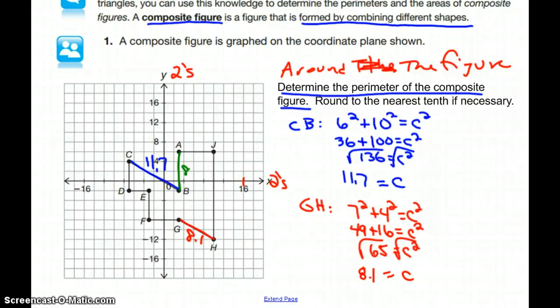From J to H, that's 9 full boxes, so I have a length of 18. GH we already found. FG, we have 2 full boxes, 2 half boxes for a length of 6.